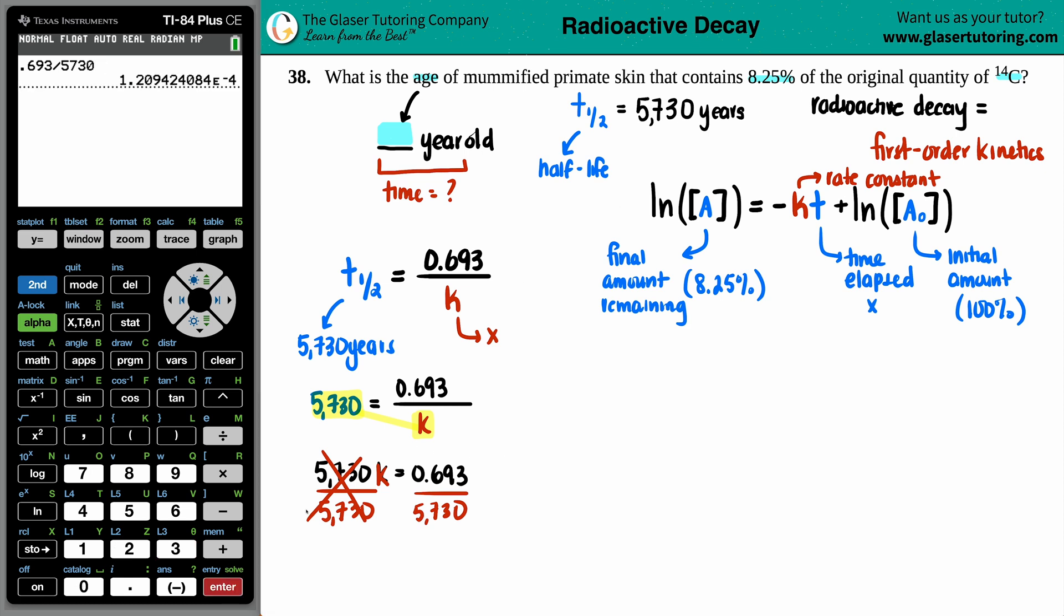So we get a K value, a rate constant, of 1.209 times 10 to the negative fourth. Since the half-life was in years, this K value would be years to the minus one. Now we know that this rate constant is going to be the 1.209 times 10 to the negative fourth. So whatever we found out here, plugging it in there.